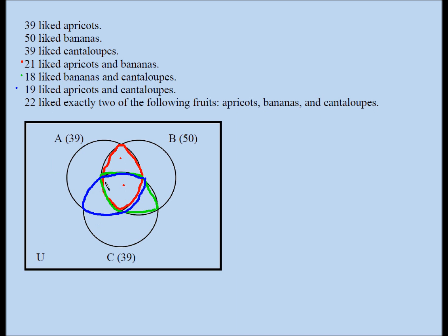The problem is, if we knew what goes in the center — the region where all three overlap — we would be all set, but we don't. What we don't have is how many people liked all three. It says 22 liked exactly two of the following fruits, so 22 people liked exactly two of them. The last line tells me these three numbers should add up to 22. What we're going to do is call the center region x.